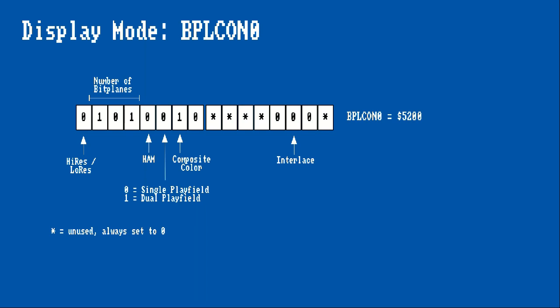Let's look at which Amiga hardware registers are involved in setting up a single playfield display. First, take a look at BPLCON0, one of three bitplane control registers. The other bitplane control registers come into play when dealing with dual playfields and sprites, which we will cover in a later episode. In this episode we are primarily interested in the bits that define the resolution and the number of bitplanes. This example shows the configuration for a low resolution, non-interlaced, single playfield display with five bitplanes.